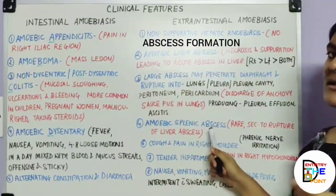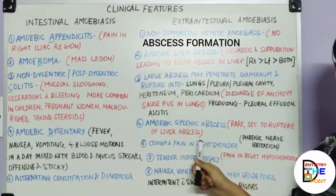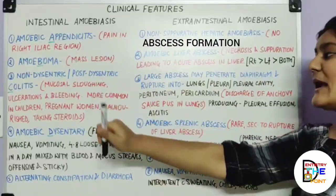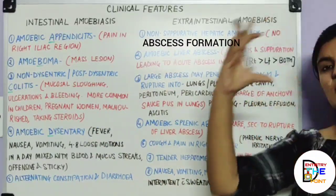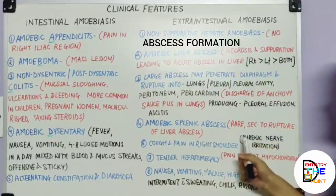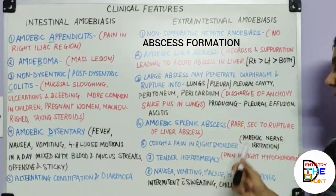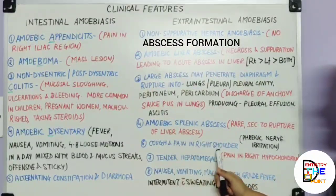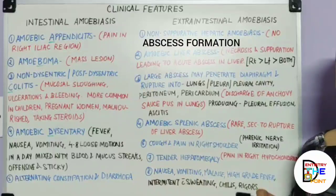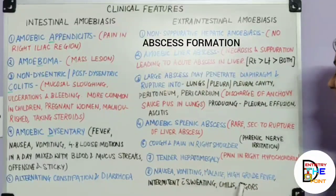Amoebic splenic abscess is a rare, secondary manifestation due to rupture of the liver abscess, since the spleen is close to the left lobe. Clinical features include cough and pain in the right shoulder due to phrenic nerve irritation when the abscess enlarges into the diaphragm area. Tender hepatomegaly may cause pain in the right hypochondriac region. Jaundice is rare. Systemic features include nausea, vomiting, malaise, and high-grade intermittent fever with sweating and chills.